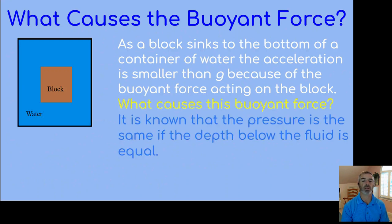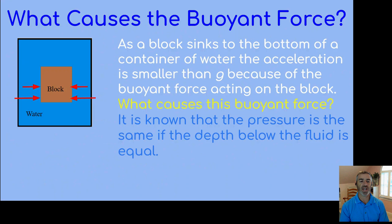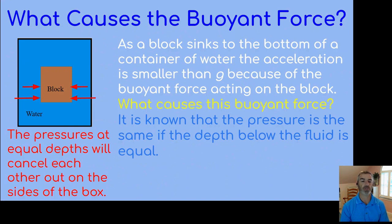It is known that the pressure is the same if the depth below the fluid is equal. We can see pressures near the bottom of the box on the side, and as we move up, that pressure gets smaller. On the sides, the pressures cancel each other out because you have one on the left and one on the right that are equal at equal depth, so there is no net pressure on the sides.